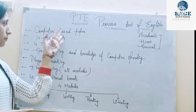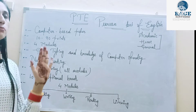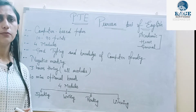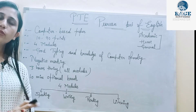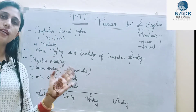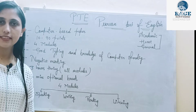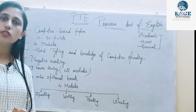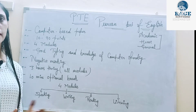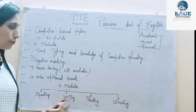So the first point is computer-based paper. Second: in PTE there are not 9 bands like IELTS — instead there are points from 10 to 90. For example, 48 points equals 6 bands, and there are points equivalent to 6.5 bands as well. From 10 to 40 is considered failed; 40 and above is passing. The exam is scored from 10 to 90 points. Also, there are 4 modules just like IELTS: Speaking, Writing, Reading, and Listening — all 4 modules are in PTE.